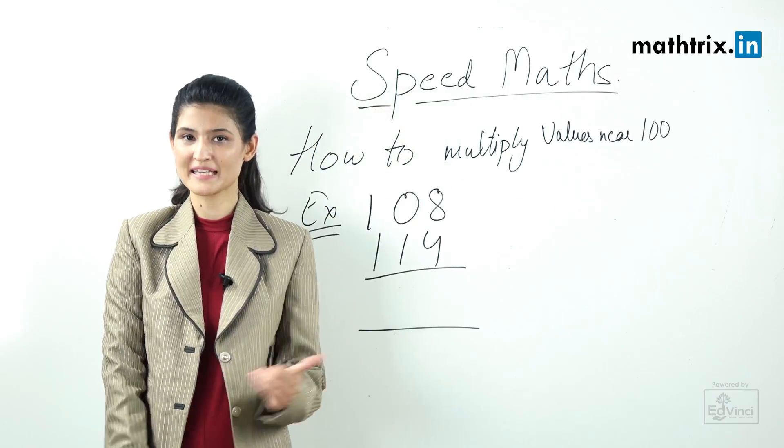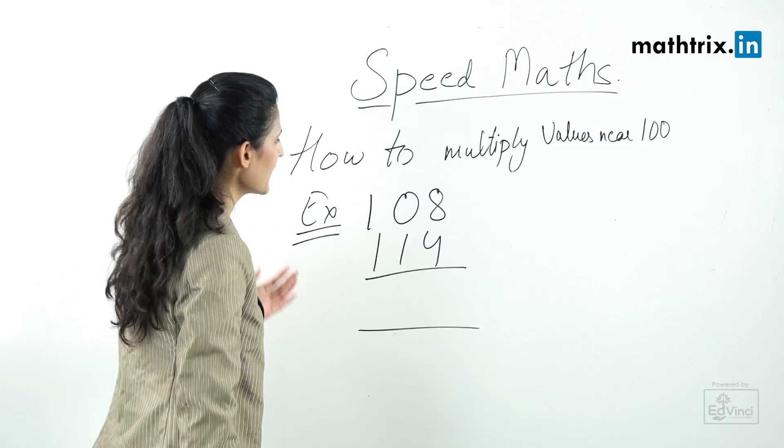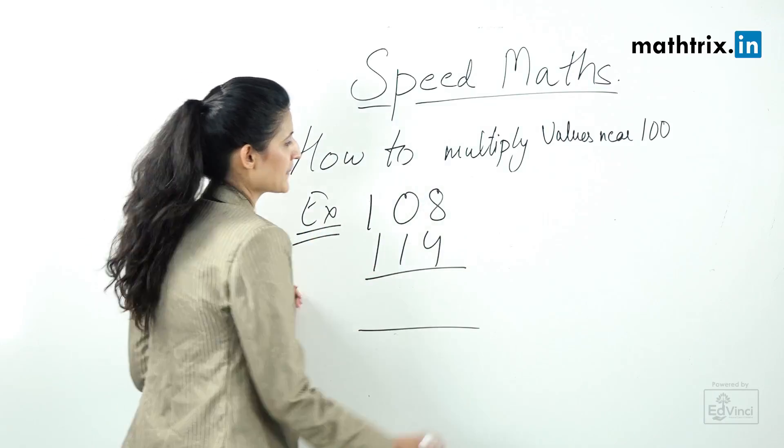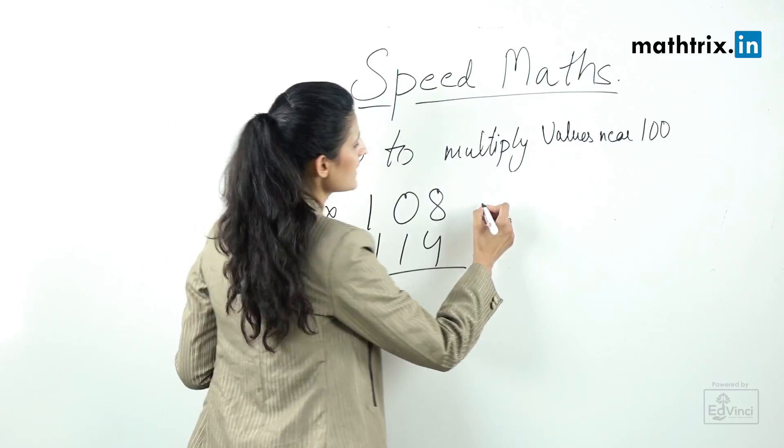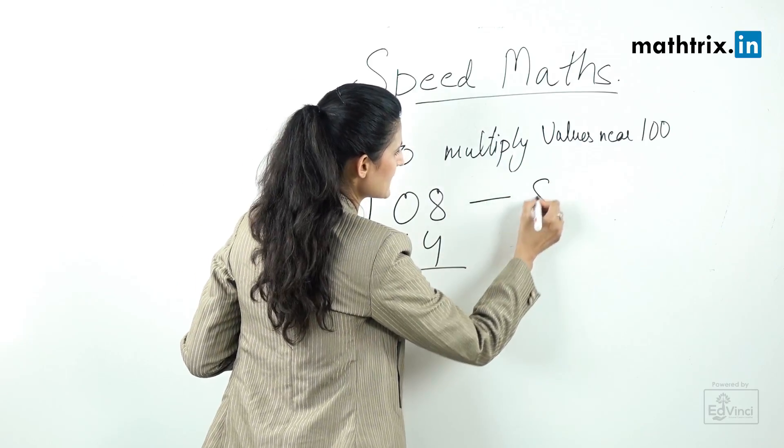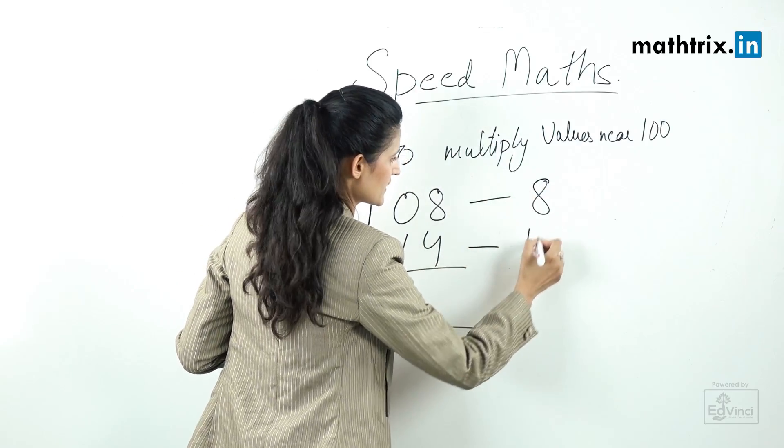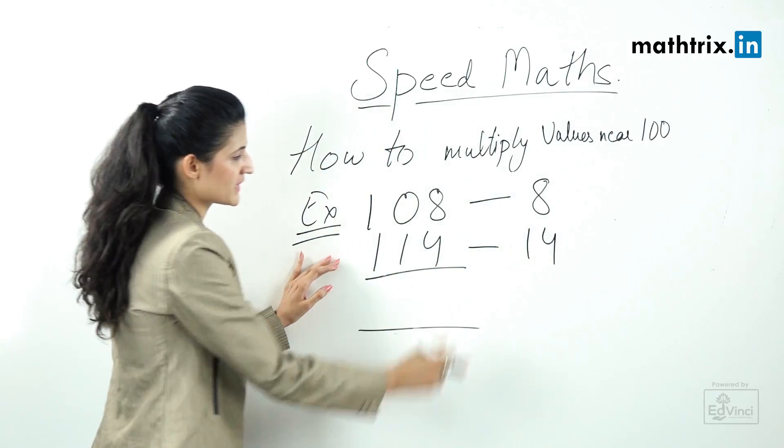Let's move to the next example where we are multiplying 108 into 114. Step number 1, base is 100. Step number 2, the differences: 108 is 8 and for 114 it's 14.